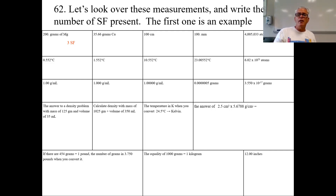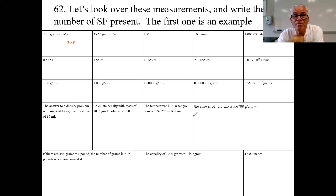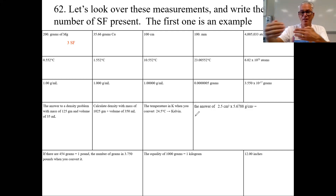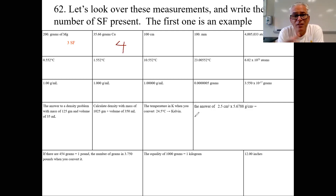In this case there are three significant figures. Next: 35.66 grams — that's four significant figures, no zeros, all digits count. Then 100 centimeters with no decimal point — not so sure about that measurement — just one significant figure.